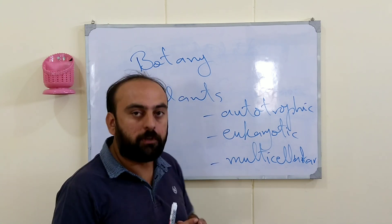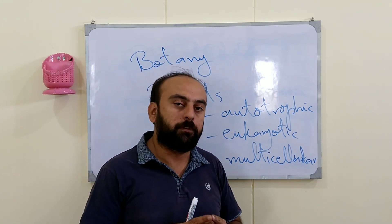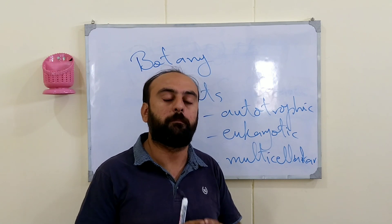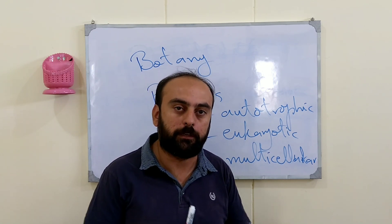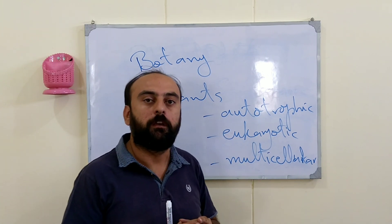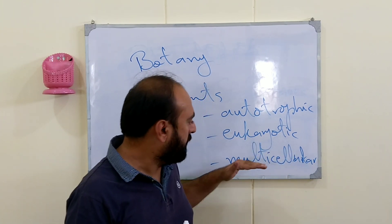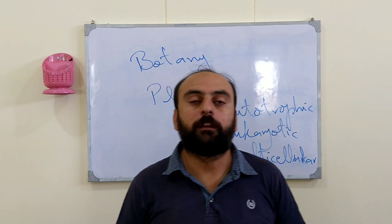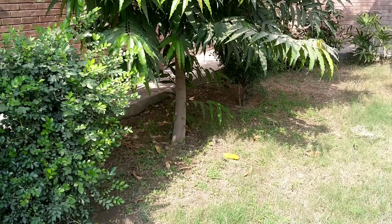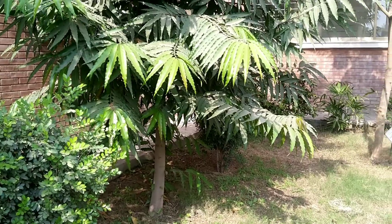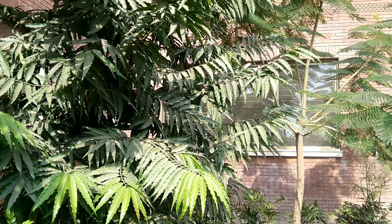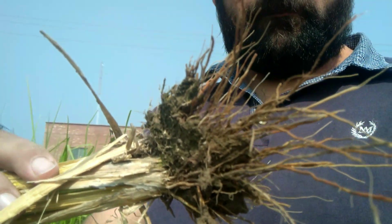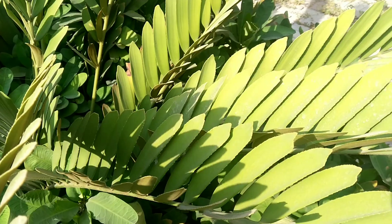Plants are eukaryotic, meaning they are organisms in which cells have their DNA or genetic material packed in distinct nuclei — their cells have a distinct nucleus. They are multicellular organisms. There are over 300,000 species of plants which include grasses, shrubs and trees. A typical plant consists of different plant parts such as roots, stem, leaves and flowers.